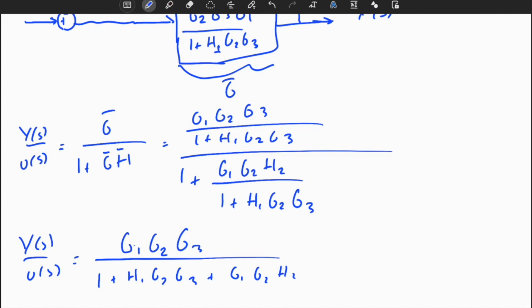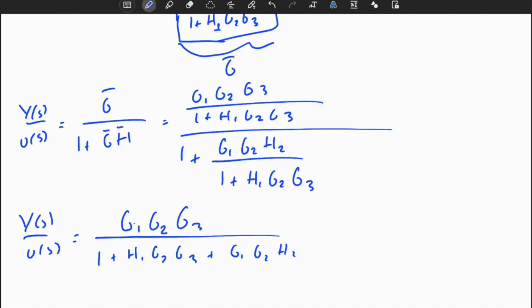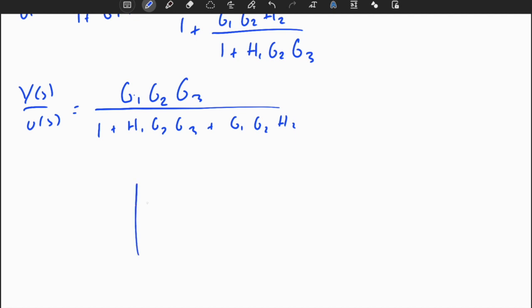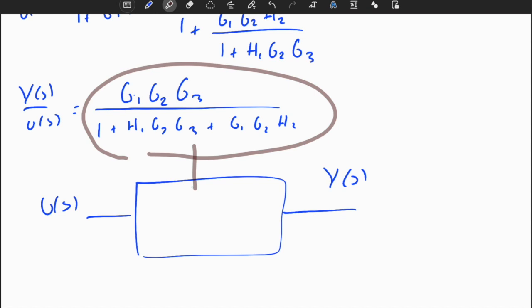Let's check the results. G1 G2 G3 over 1 plus H1 G2 G3 plus G1 G3 H2. We computed the transfer function. So if we want block diagram, it's of course equal to this simple single structure: u of s going through this transfer function to y of s.